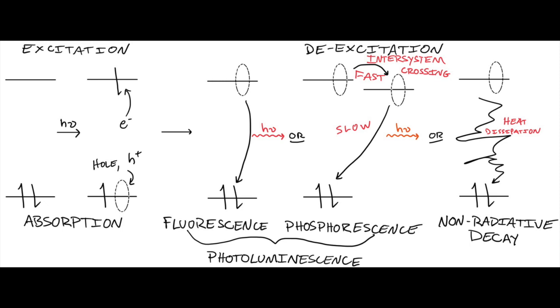Absorption occurs when a photon comes in whose energy is commensurate with an electronic transition from a lower state to a higher state. In the last video, we talked about the difference between the valence band and the conduction band in a semiconducting polymer, and this applies to a wide variety of materials. Some materials that absorb in the visible include molecular dyes like food coloring, lycopene, beta-carotene, stuff that makes clothes colored, and quantum dots, which are semiconductor nanocrystals. It also occurs in bulk semiconductors.